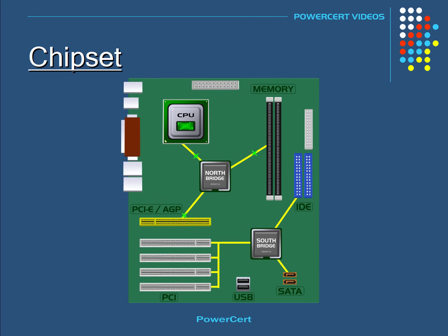The South Bridge is responsible for the lower portion of the motherboard, while the North Bridge is responsible for the upper portion. There is no direct connection between the CPU and the lower portion of the motherboard. So if the PCI, USB, IDE, or SATA ports needed to communicate with the CPU, the information has to go through the South Bridge and then up through the North Bridge and then to the CPU.